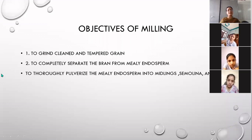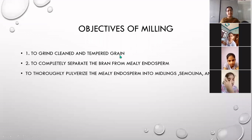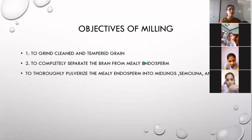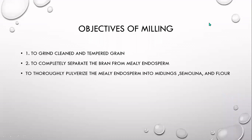These are the three objectives of milling. In milling, grains are cleaned and tempered. The goal is to grind clean and tempered grain to completely separate the bran from the milling endosperm, and to thoroughly pulverize the milling endosperm into middlings, semolina, and flour.